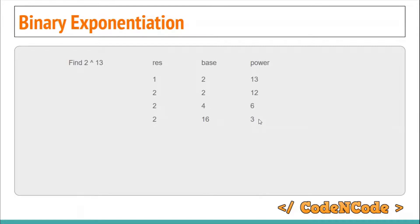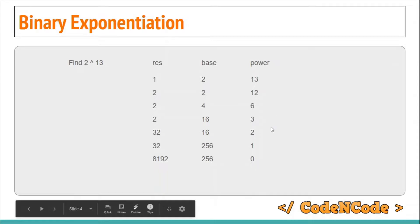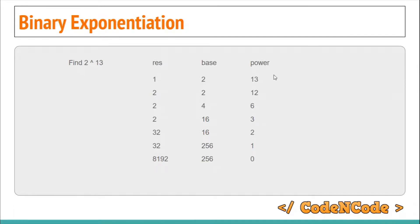Now the power becomes odd again. 16 raised to power 3 can be written as 16 multiplied by 16 raised to power 2, so we multiply the 16 into result and calculate 16 raised to power 2. Since power is even, 16 raised to power 2 is the same as 256 raised to power 1. Whenever power is odd you multiply base with result and reduce power by 1. As soon as power becomes 0, that is your final result. At most every second operation the power gets halved, giving a complexity of O(log n) base 2.